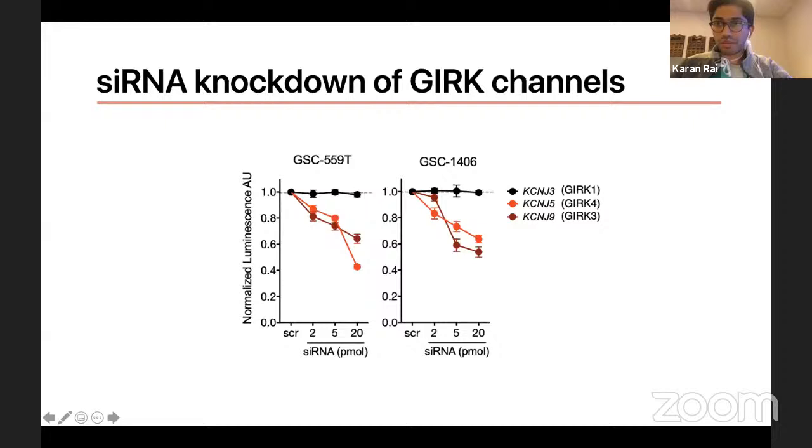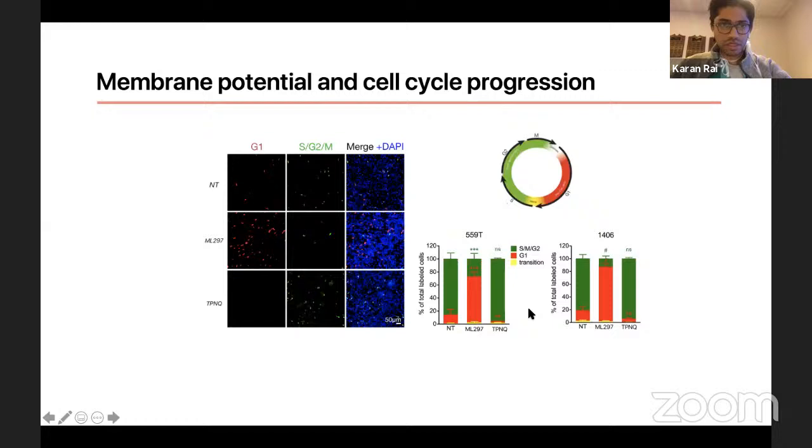So you can also develop siRNAs and try and knock down these channels and see what happens. So if you knock down GIRK3 and 4 using that same assay, I found that it did affect GSC viability.